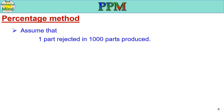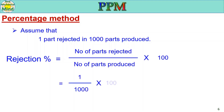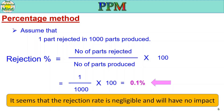Next, the percentage method. Assume that one part is rejected in one thousand parts produced. The rejection percentage formula is: number of parts rejected divided by number of parts produced, multiplied by 100. Applying the values: 1 divided by 1000 multiplied by 100 gives 0.1%. So the rejection rate is 0.1% for one part in a thousand produced. This seems negligible and appears to have no significant impact.